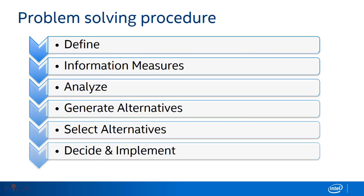This slide talks about the procedure in any problem-solving approach. The first step is defining — making sure you understand the correct problem before proceeding. The second is information measures — understanding more about the problem before proceeding. The third is analyzing the problem, which determines the effectiveness of possible solutions. Then there is generating alternatives — generating possible solutions using various tools. Finally, decide and implement — planning the next course of action or implementing the solutions.